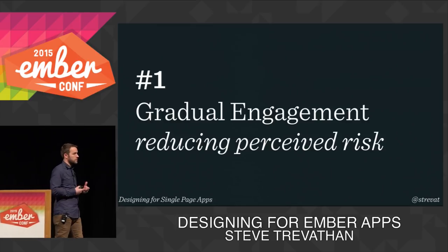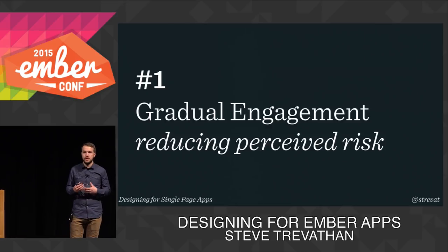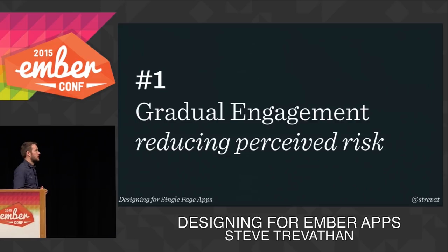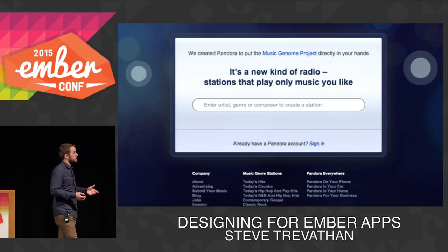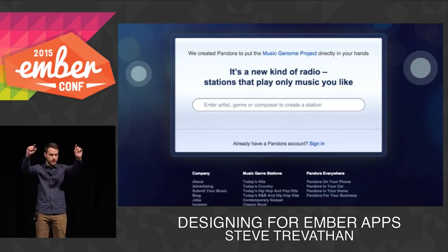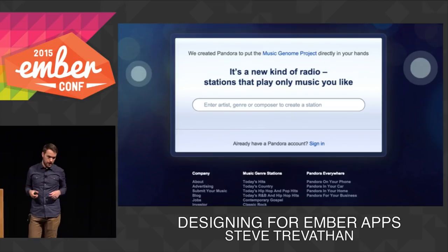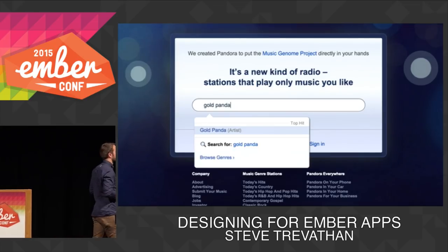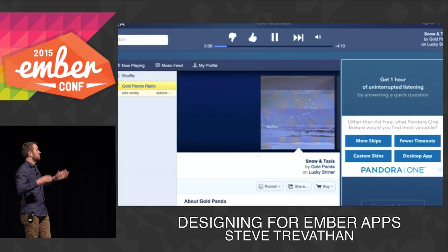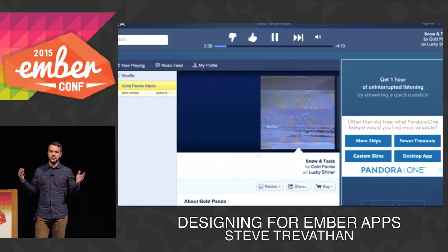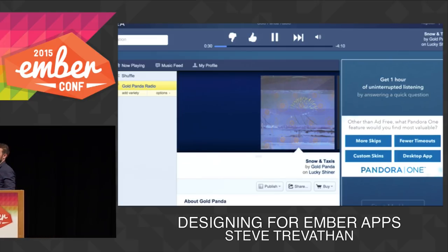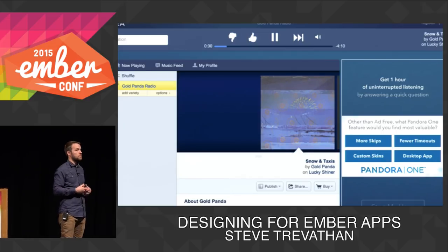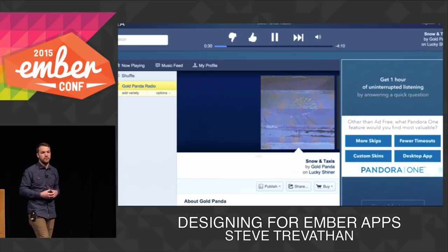One is gradual engagement. This is really more of a method than a particular pattern — it's going to be very different with every product you design. The idea is that you can reduce the perceived risk of signing up for your application by allowing users to get to know it over time. A good example is Pandora. Instead of throwing up a sign-up wall, they drop you right on the homepage, communicate that it's a new type of radio that plays stations only you like. You start typing, build a station, move forward — and you get the core value immediately. You can listen for free. After a number of songs, they may ask you to sign up, but you've already gained the value from them, and it's a much easier sell.